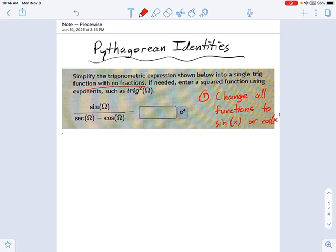And you can't just rewrite them, like turn your secant into sine. It doesn't quite work like that. What I mean is using the reciprocal or quotient identities.